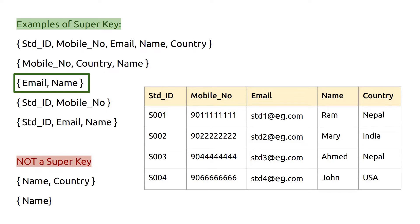Email plus name is also a super key. As we know, emails are unique — no two persons can have the same email address — so email can uniquely identify a record. If email alone can, then obviously email plus name can also do that. Similarly, student ID plus mobile number can identify a record uniquely, and many more combinations are possible.